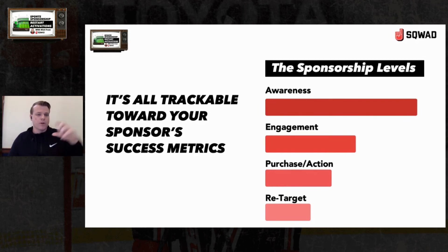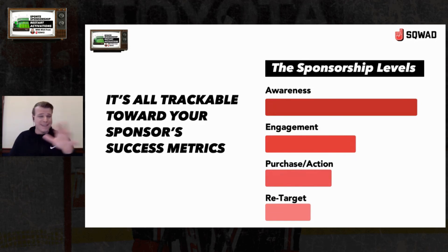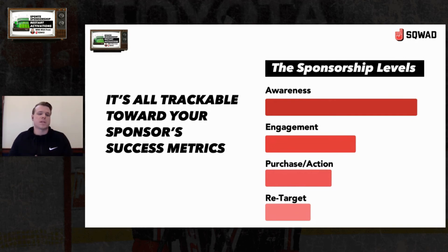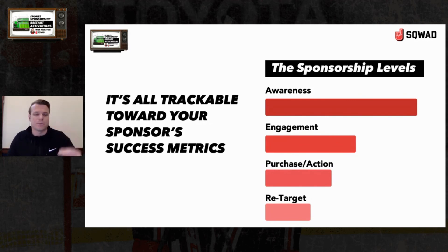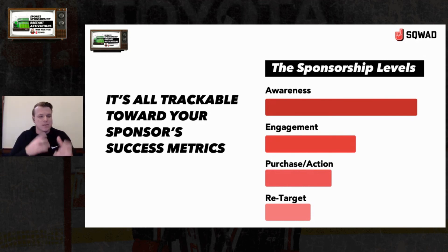The last piece is retargeting. Instead of just saying 'we handed out 10,000 coupons,' you can say 'here's how many were sent, here's how many were opened, here's how many weren't — let's cross-reference with your database to see how many were used.' That gives you five segments to retarget. If a fan played, won a coupon, but didn't use it, the sponsor can retarget them with social media ads or an email from the restaurant owner saying 'Come use your coupon — here's a free breadstick when you do.' This activation hits every level of the funnel.